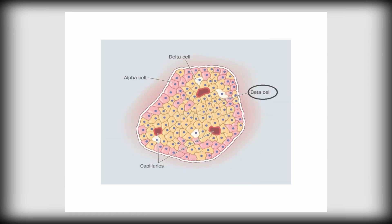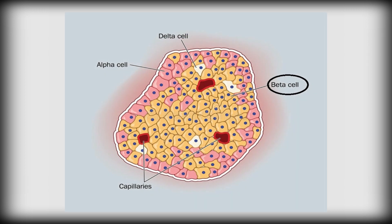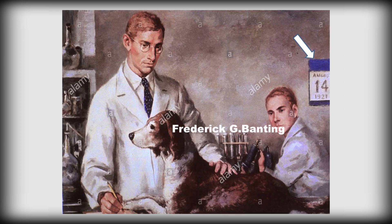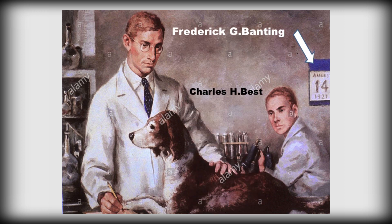Insulin is a protein hormone secreted by the beta cells of the pancreas. Insulin was discovered by the Canadian scientists Frederick G. Banting and Charles H. Best in 1921.